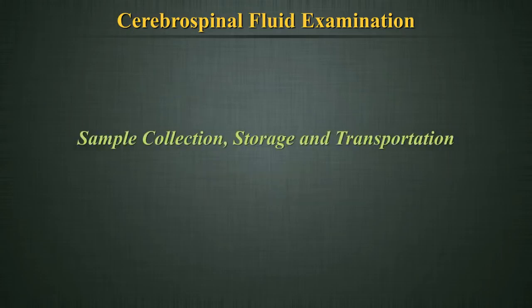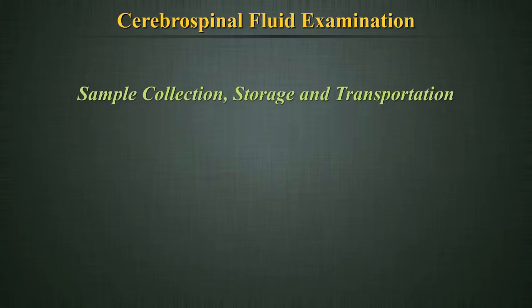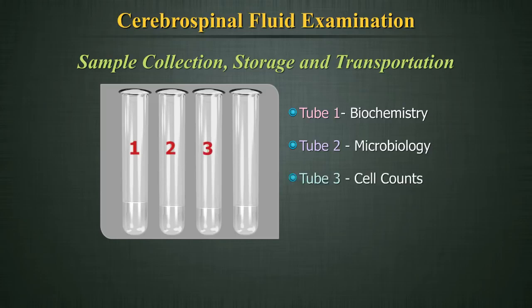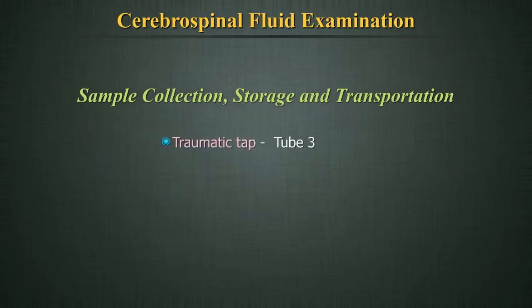Sample collection, storage, and transportation: Typically, 3-4 tubes are drawn. Tube 1 is for biochemistry, tube 2 for microbiology, tube 3 for cell counts, and tube 4 for cytology. In a traumatic tap, tube 3 must be used for maximum tests. Never use tube 1 for microbiology as it will have contamination with skin bacteria.